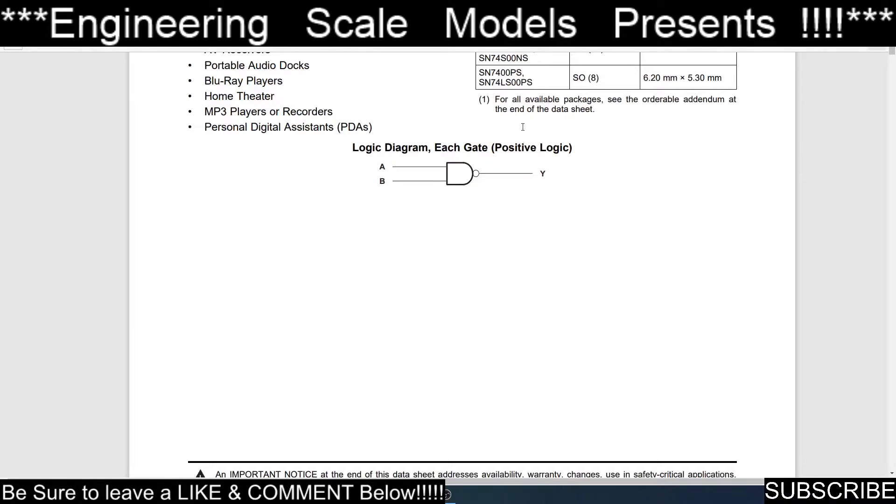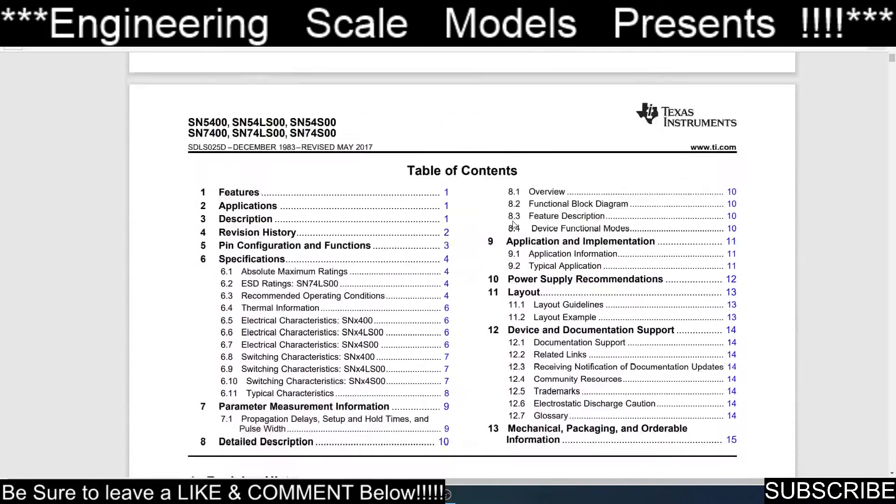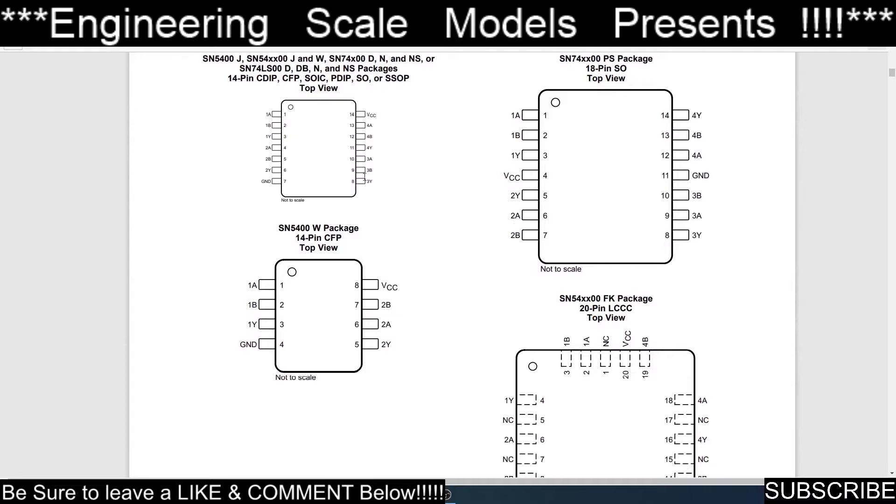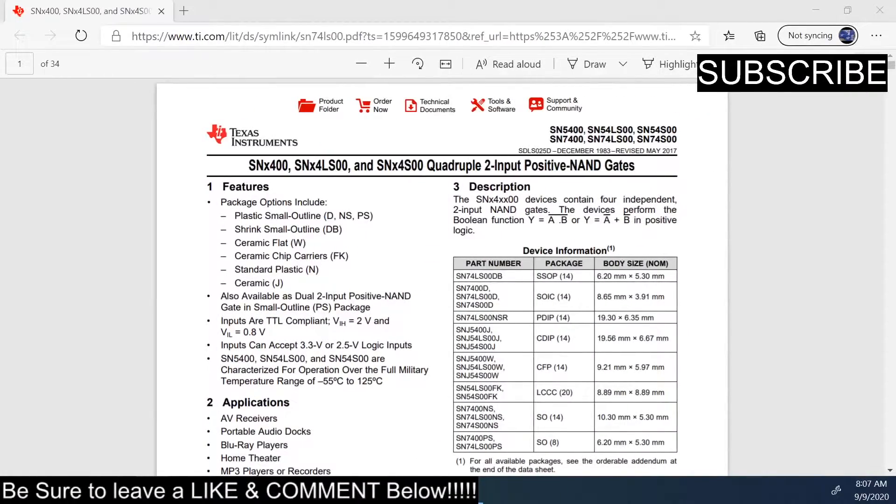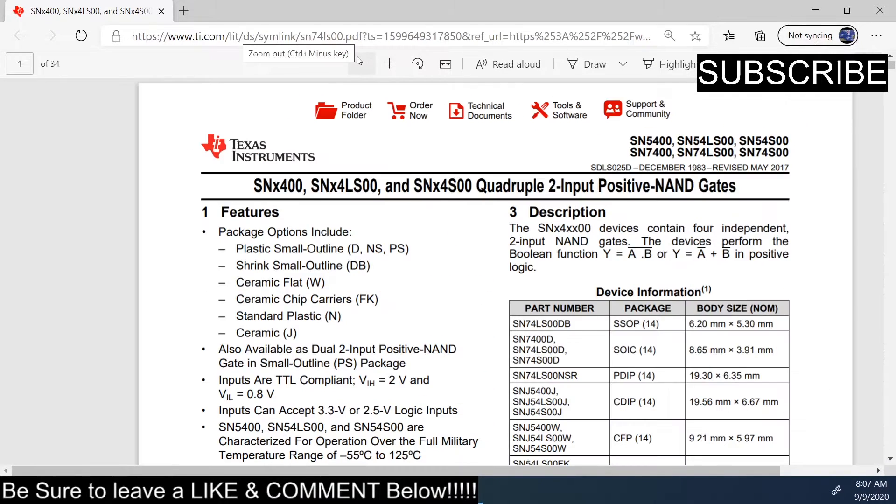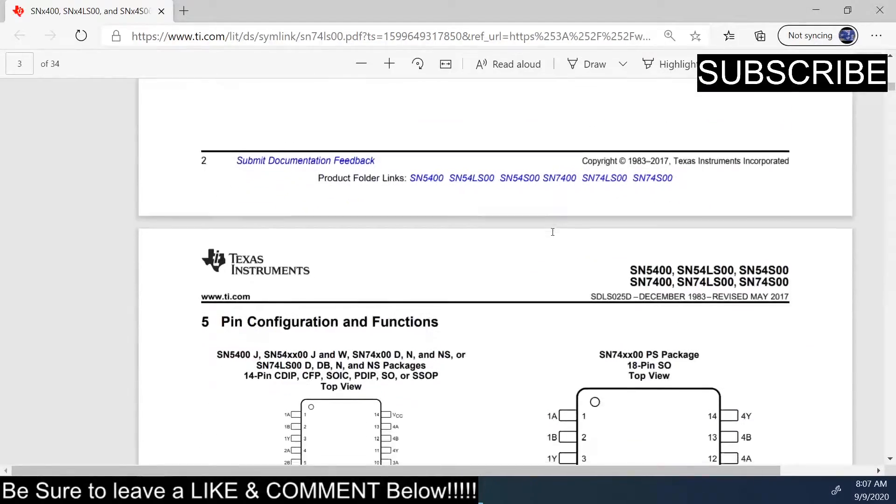So here's the diagram for it here. And we come down to the pinout. So here is the pinout for this chip. You got pin 1A and 1B, and then your inverted output will be on Y, and then you have 2A, 2B, inverted output on Y.